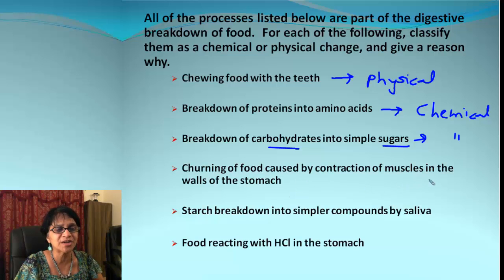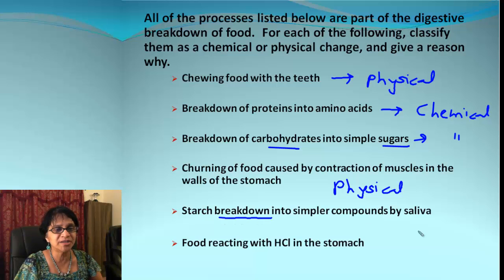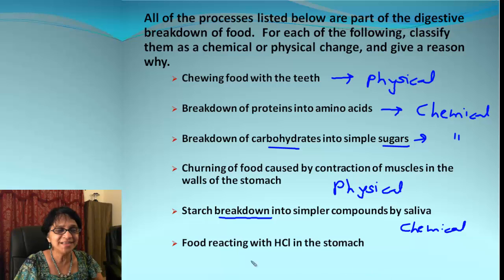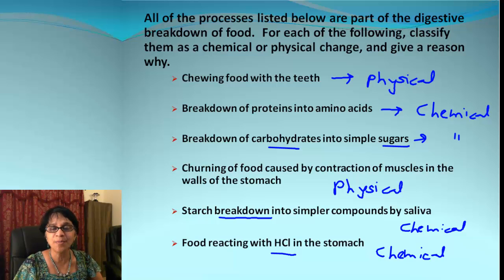Breakdown of carbohydrates into sugar — again that's digestion, so it will be a chemical process. Churning of food caused by contraction of muscles in the walls of the stomach is just mixing of food, so we can say it will be physical. Breakdown into simple components refers to digestion, so it will be chemical. And food reacting with hydrochloric acid in the stomach — that's definitely a chemical process.